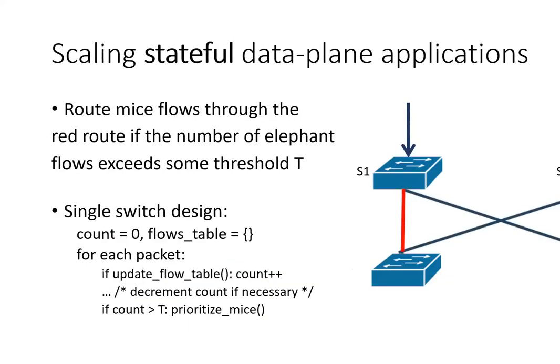Why is it so challenging to scale stateful data plane applications? To better understand that, let's take a simple adaptive routing application as an example. We first define the terms: elephant flows are flows that send data at a high rate, and mice flows send data at a low rate. At first, both mice and elephant flows can be routed by S1, which is the switch in the top left, via the red or blue link.